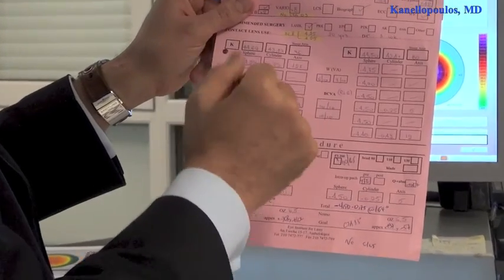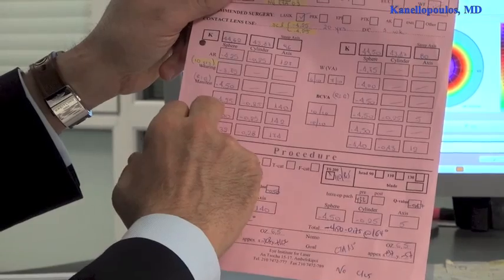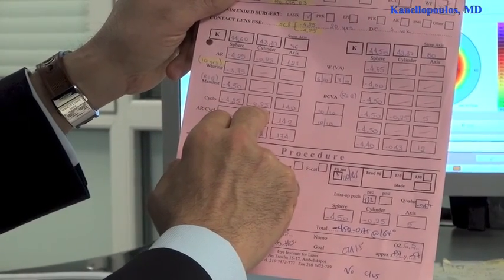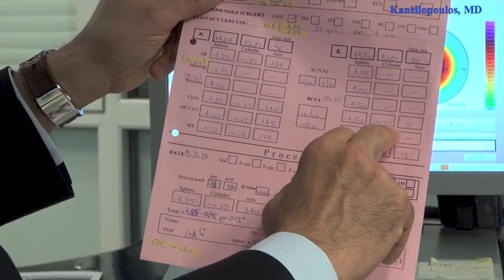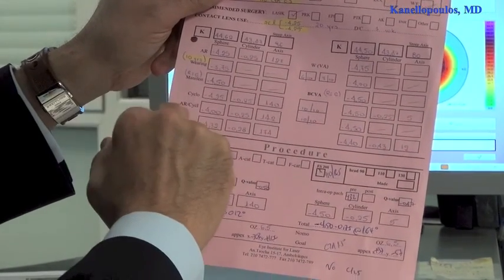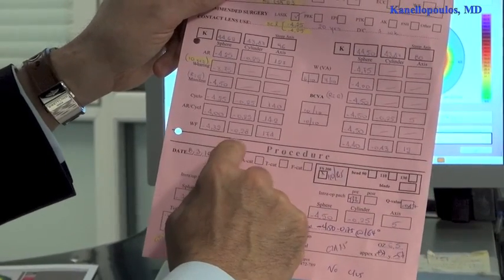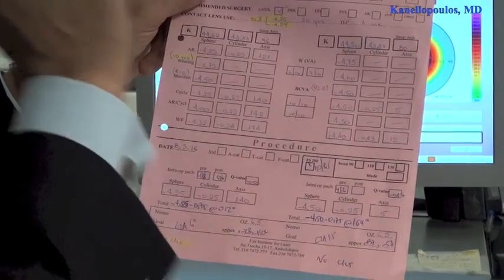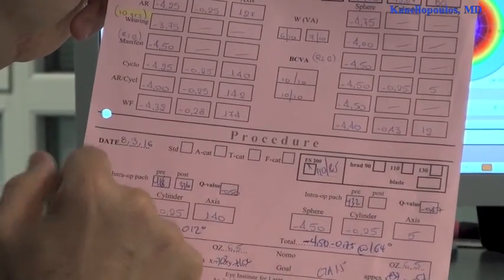The cycloplegic refraction with one drop of tropicamide, minus 4.25 and minus 0.25 of astigmatism. Minus 4 and a half, 0.25 of astigmatism left as well. The auto refraction post-dilation and partial cycloplegia, which is the same. And the wavefront measurements, which do show, confirm the prior refractions.